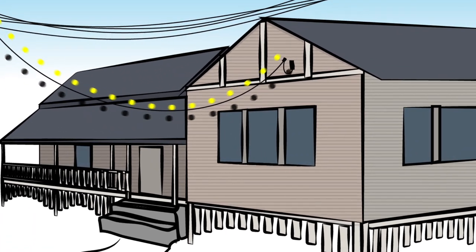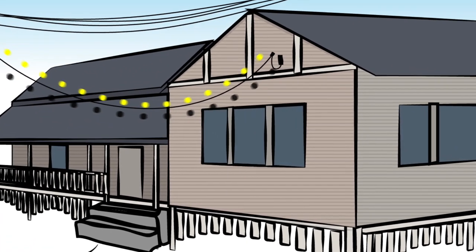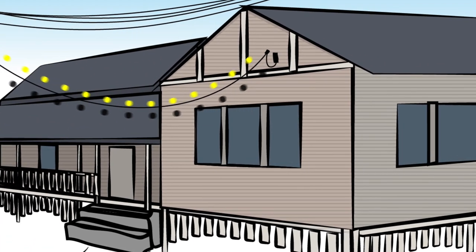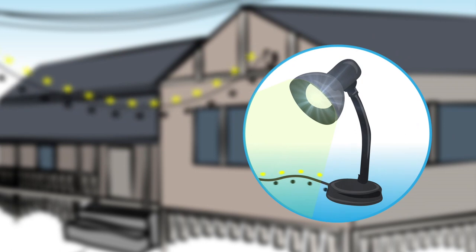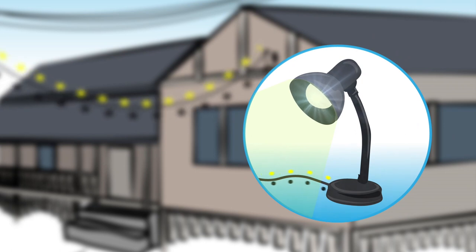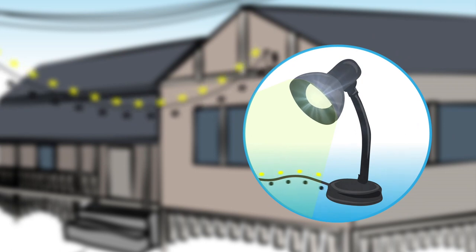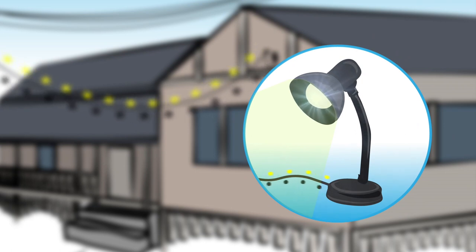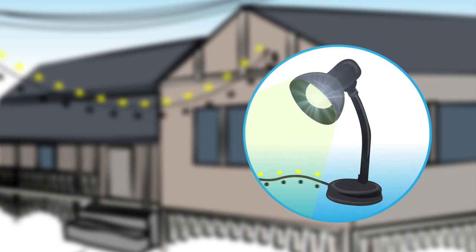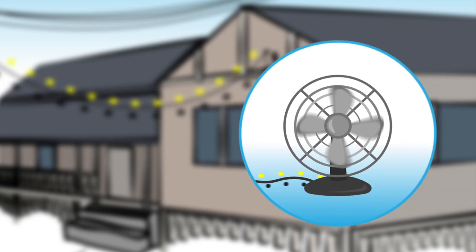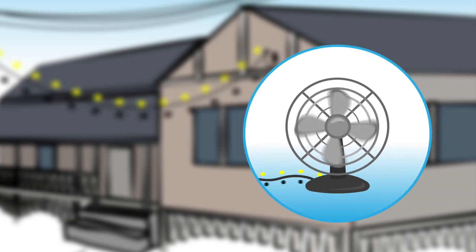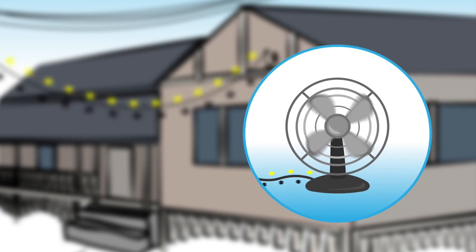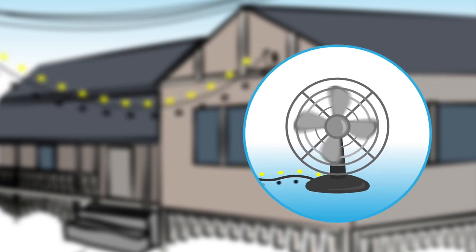In electricity, electrons travel in a circuit or loop. For an electrical appliance to work, the electricity needs to go in through wiring, do its job, then come out again and go back towards the power source.